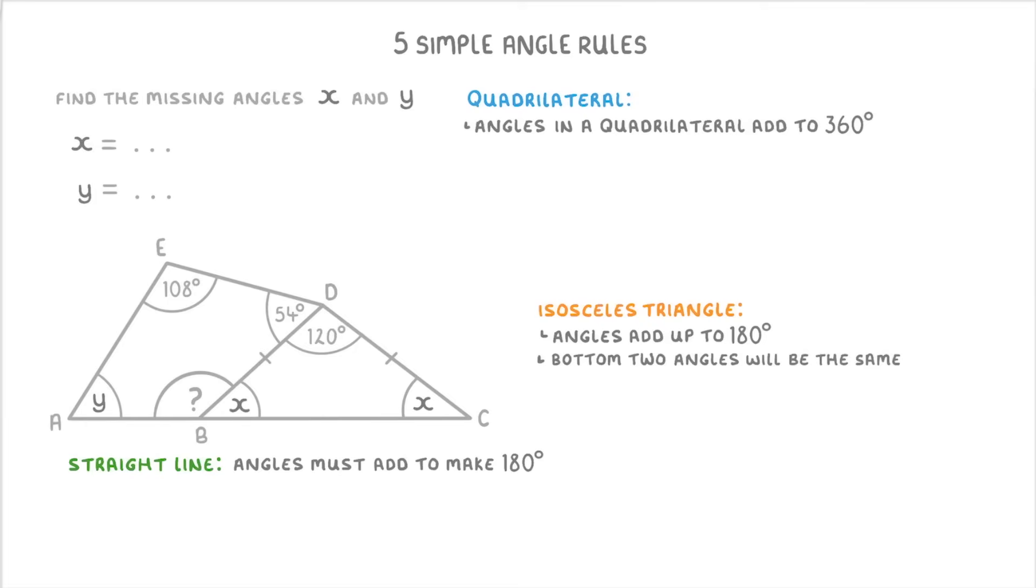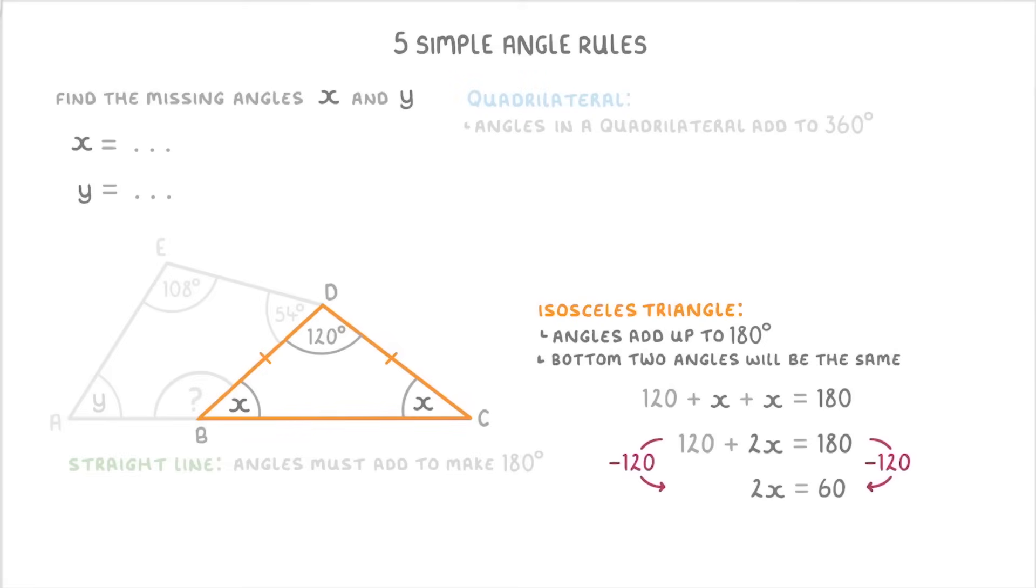And it's normally easiest to just work out whichever angles you can, one by one, until you end up finding the angles that you need to answer the question. So here, we could start with the isosceles triangle and say that 120 plus x plus x equals 180, which we can then simplify to 120 plus 2x equals 180. Then 2x equals 60. And finally, x equals 30. So we know that both of these angles are 30 degrees.